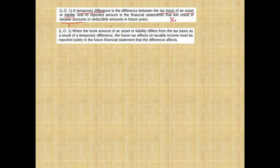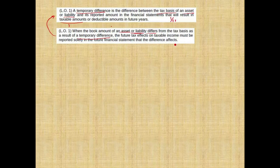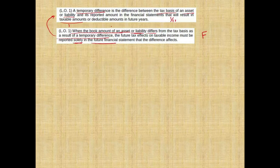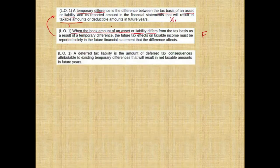Second question: when the book amount of an asset or liability differs from the tax basis as a result of a temporary difference, the future tax effect on taxable income must be reported solely in future financial statements. This is false. The temporary difference has to be reported now, in the current financial statements, as either a deferred tax asset or a deferred tax liability — not in future financial statements.